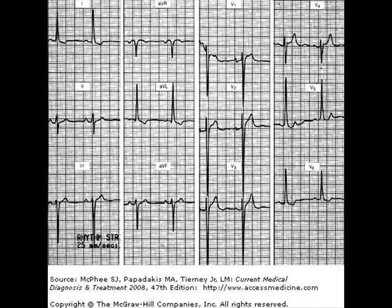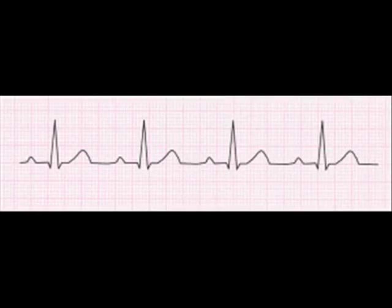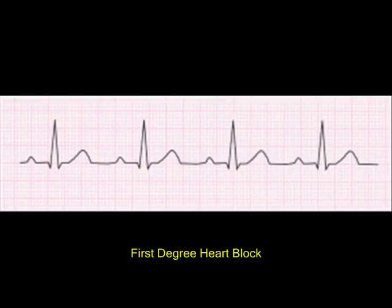On hypocalcemia you will see the reverse — increased QRS complex width. Now in this EKG you will see increased PR intervals. You can observe how the PR interval is more than 0.2 seconds. Normal PR interval is between 0.12 to 0.2 seconds. This is characteristic of first degree AV block.